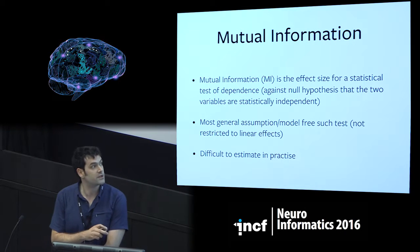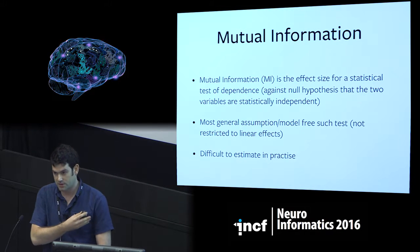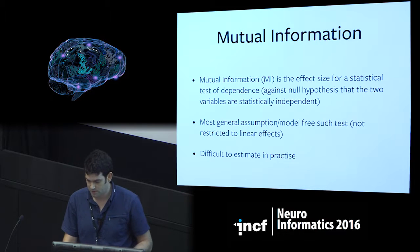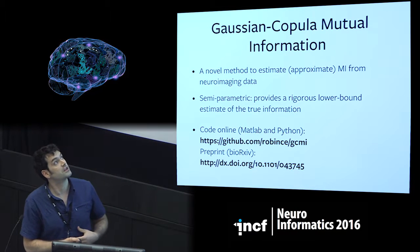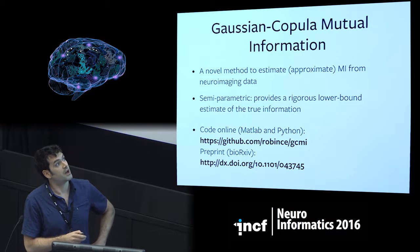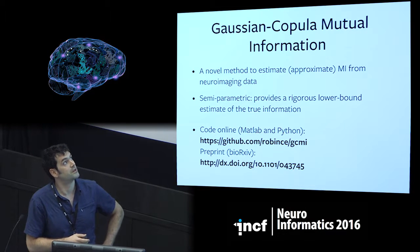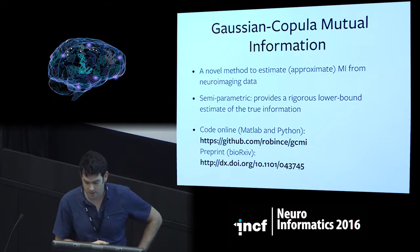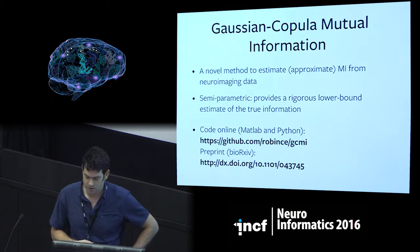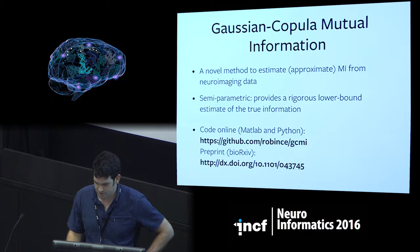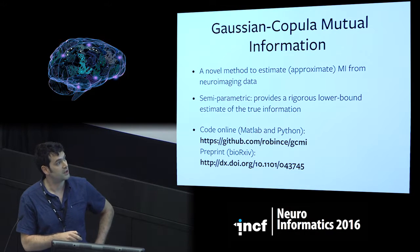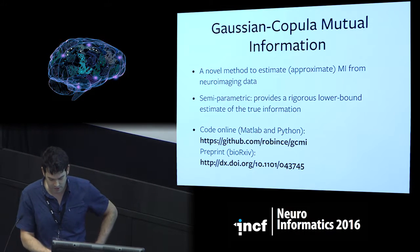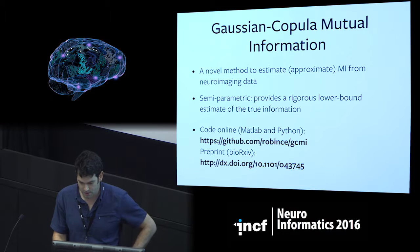But it's quite difficult to estimate in practice. What I'm presenting today is an alternative method which actually gives an approximation of mutual information. It's semi-parametric, so it provides a rigorous lower bound, which is useful for statistical testing. And of course, I want to emphasize there's code online and a preprint which goes into much more detail that's currently under review.